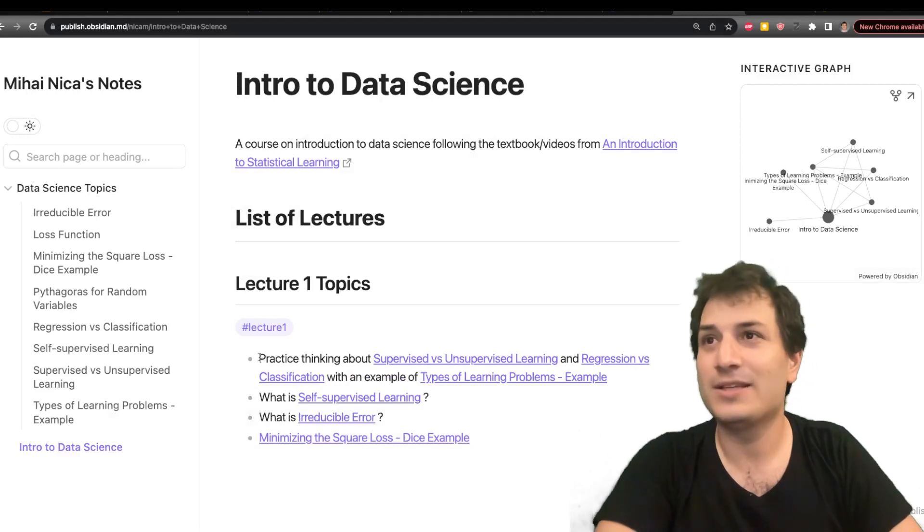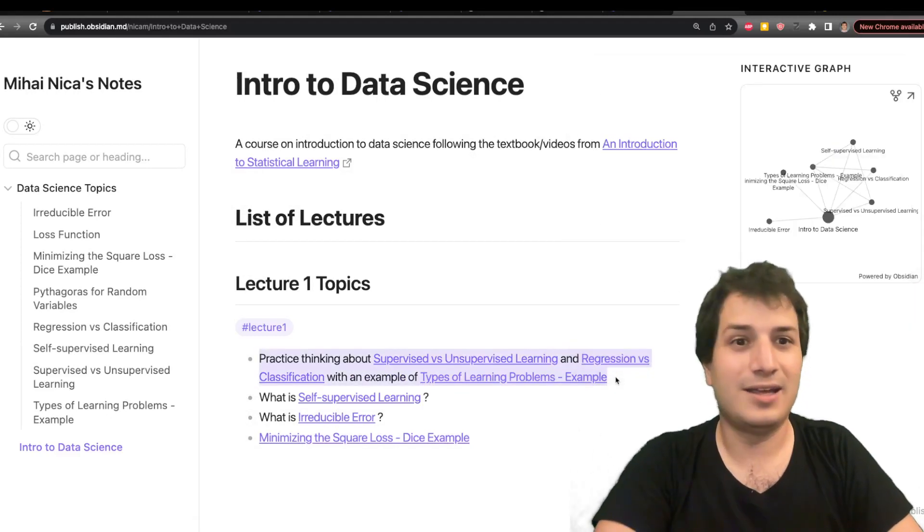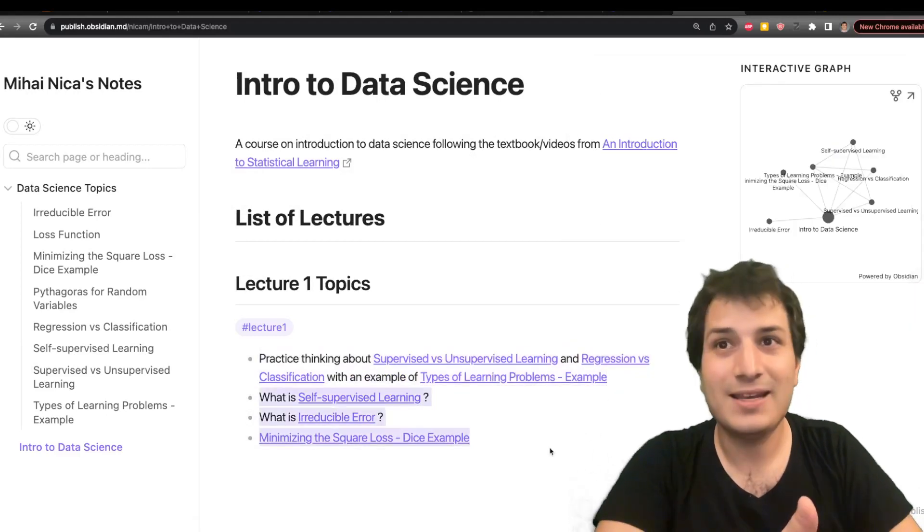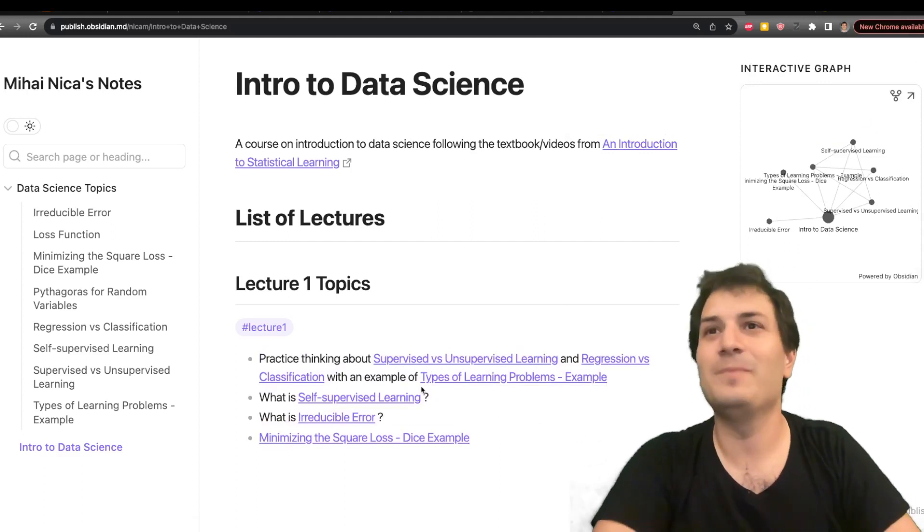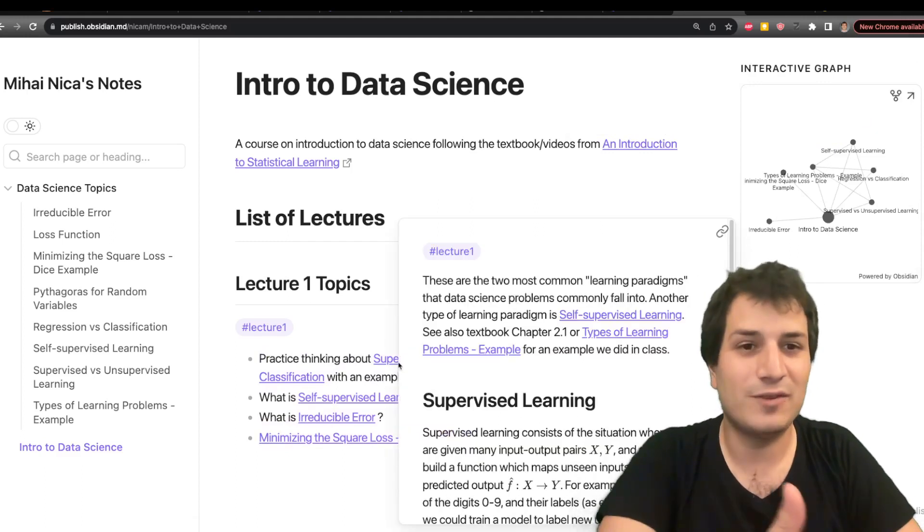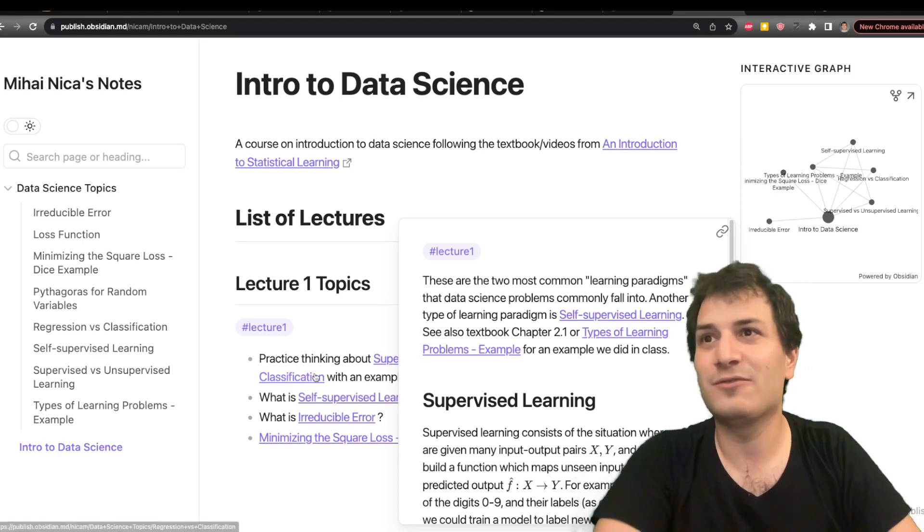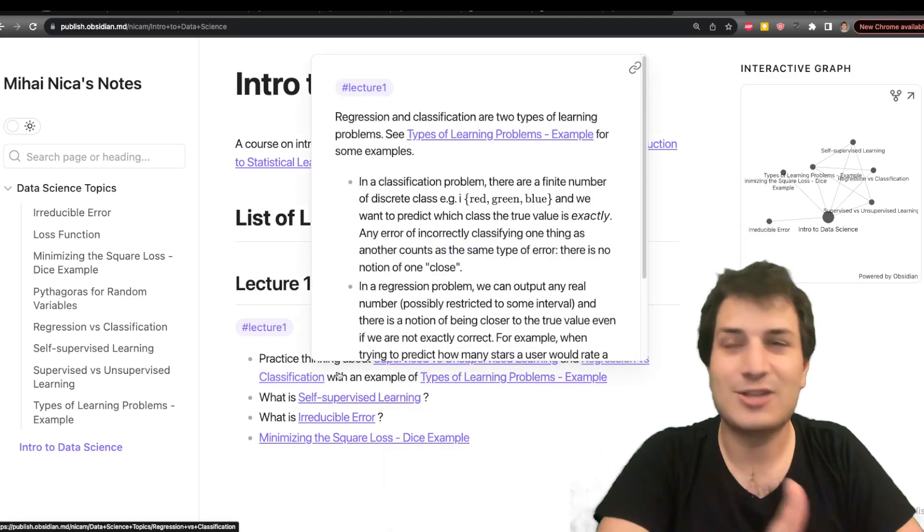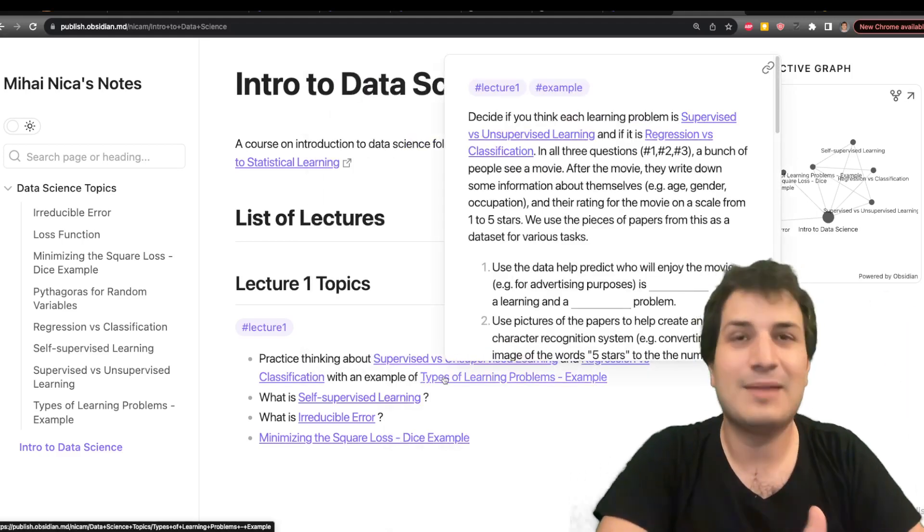The video for lecture 1 is also posted. You can see the main ideas of lecture 1. I put them in bullet point right here for you to see. So we did some supervised learning versus unsupervised learning. What's the difference? Regression versus classification. What's the difference? And then we did this example in class.